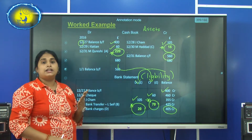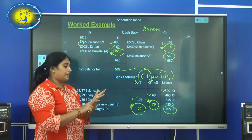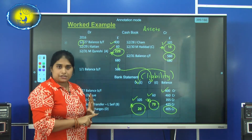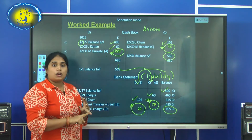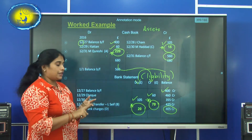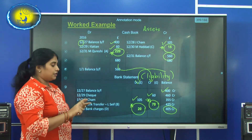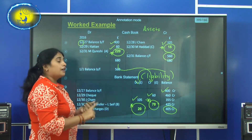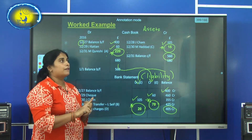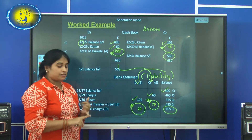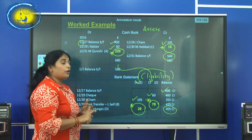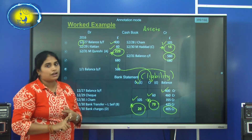All together we learned there can be unpresented cheques, bank lodgement, standing orders, direct debit, bank charges, interest, and bank transfers as reasons for the difference.